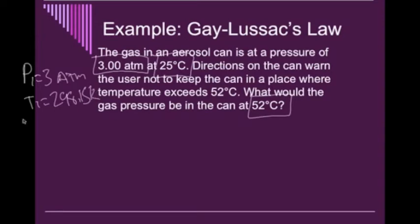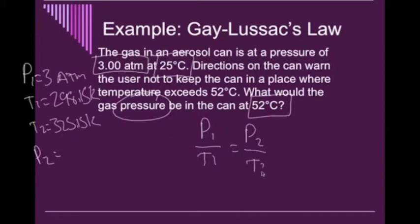And we have a secondary temperature, or T2, of 52 degrees Celsius, which is 325.15 Kelvin. And we're searching for the pressure, or P2. So we go ahead and we set up our equation where we have our P1 all over T1 equals P2 all over T2. From here, we treat it just like Charles' law. Let's go ahead and cross-multiply.